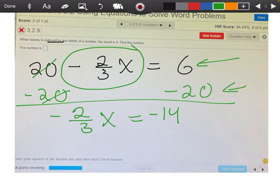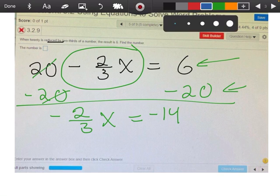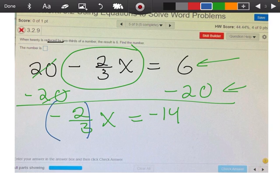Okay, so back in chapter 2, when we had an equation like this with a fraction in front of it, the way we're going to get rid of it is multiply by the reciprocal. So the reciprocal of negative two-thirds is negative three over two. And I'm going to do that on both sides.